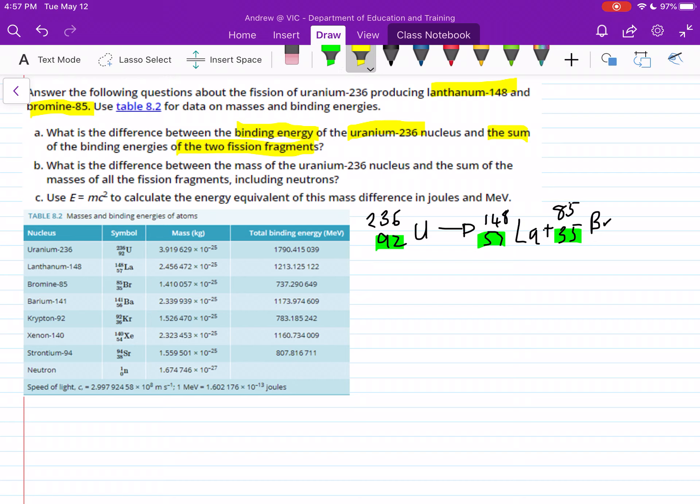Hopefully you realize, all you need to do is 148 plus 85 and see how many short you are. If you do this, you'll realize that we're three short. So we need to add three neutrons, and you'll see this in our table down the bottom, the neutron. We need to add three of them, so we just put a three out the front, and then 1-0n.